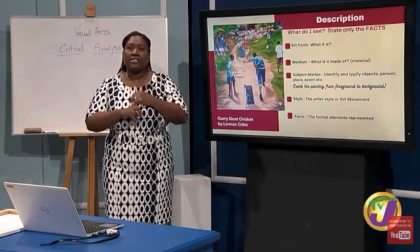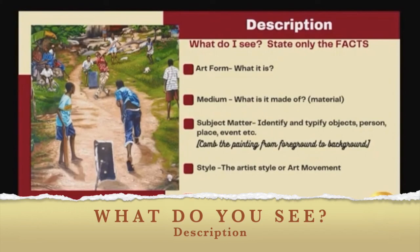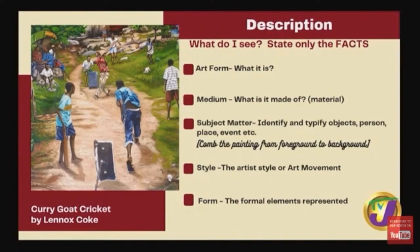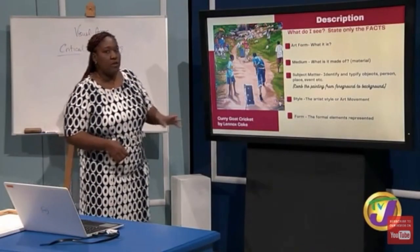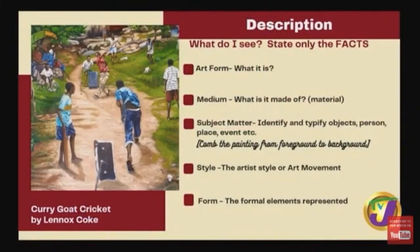We want to start with Description — D for Description. On the description you're only going to state what you see, stating only the facts. You're going to be identifying the art form — is it a painting, is it a sculpture? Medium — what is it made of? Subject matter — identify objects, persons, place, events. Comb the painting from foreground to background. Then look at the style or art movement the artist follows. And lastly, form — the formal elements that compose the artwork.